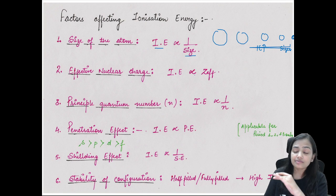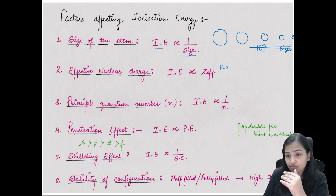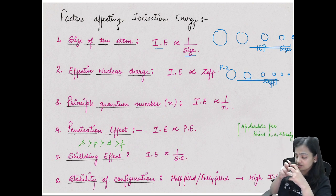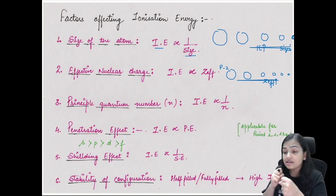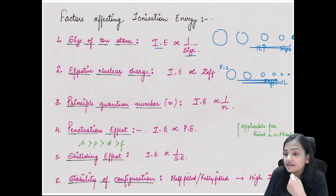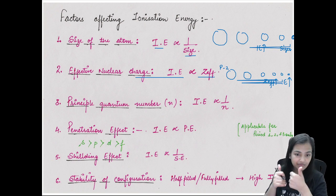The second factor is effective nuclear charge (Z_eff). Moving left to right across a period, Z_eff increases and size decreases. If the nucleus is becoming more powerful and attracting electrons more tightly, more energy is required to remove an electron. So if Z_eff increases, ionization energy also increases - ionization energy and Z_eff are directly proportional to each other.